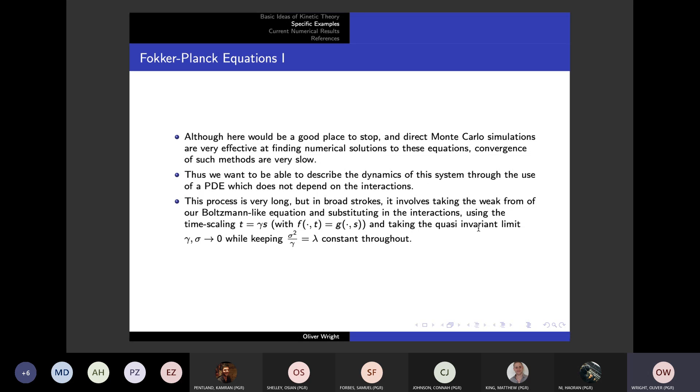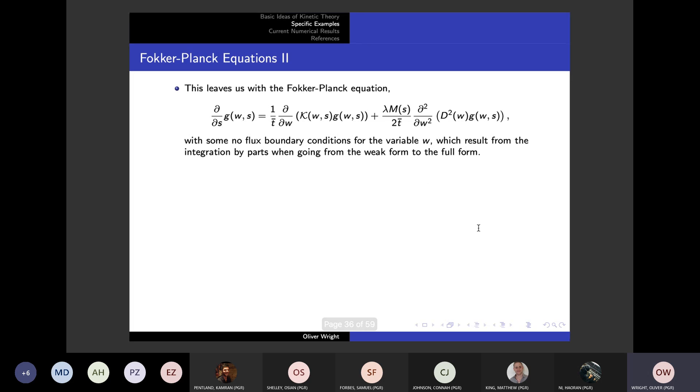Although here is perfectly good to stop and would be very useful in a lot of situations, finding numerical solutions to this Boltzmann equation is relatively slow since we have to use Monte Carlo simulations for it. And convergence of Monte Carlo simulations are very slow. So instead, we would want to look at this as a true PDE that depends only on the actual interaction and just generally gives us the idea of the population.